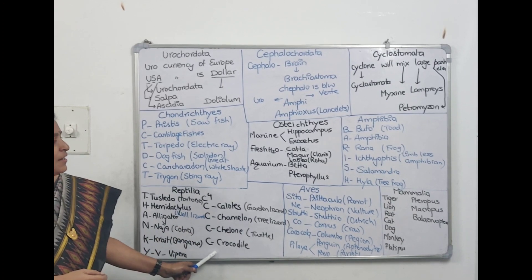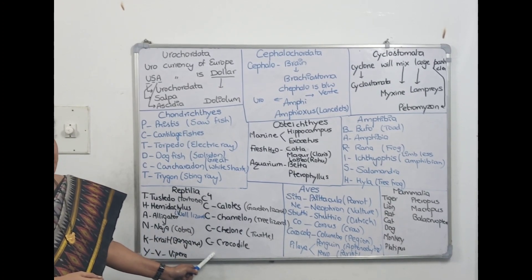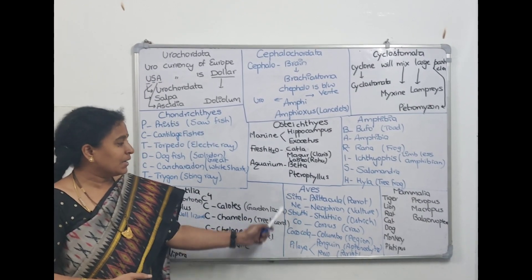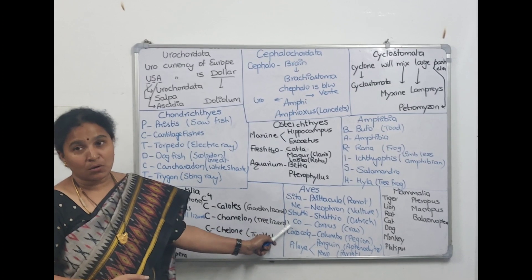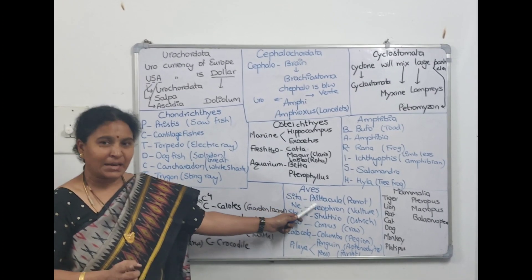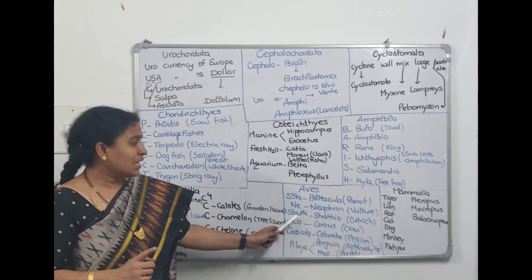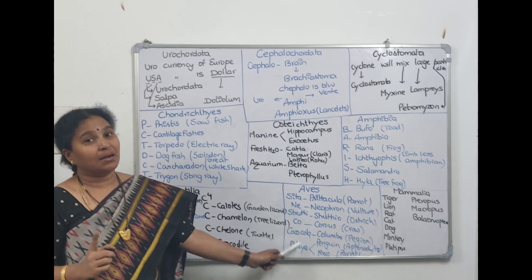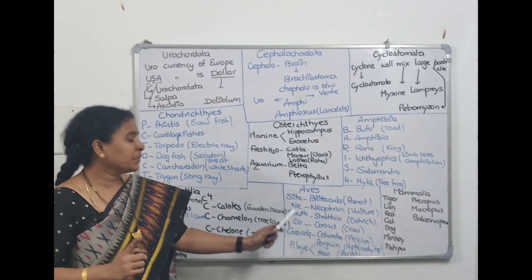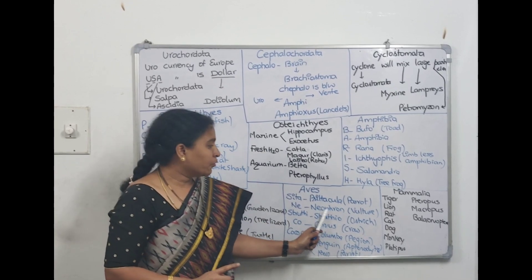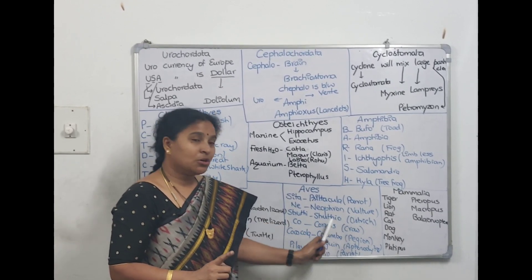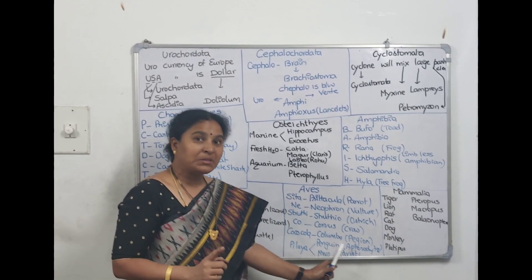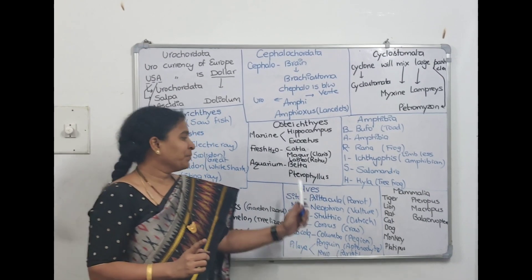Now coming to the next class, Aves. The code to memorize Aves is: 'Sita ne Shruti ko Coca-Cola pilaya.' Sita means Psittacula, ne means Neophron, Shruti means Struthio, ko means Corvus, Coca-Cola means Columba, pilaya covers Penguin and Pavo. Psittacula is parrot, Neophron is vulture, Struthio is ostrich, Corvus is crow, Columba is pigeon, Penguin's scientific name is Aptenodytes, and Pavo means peacock.